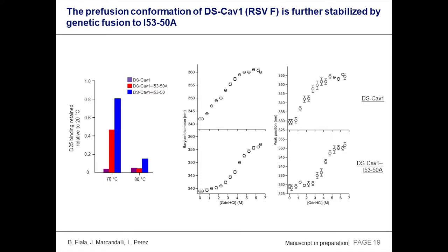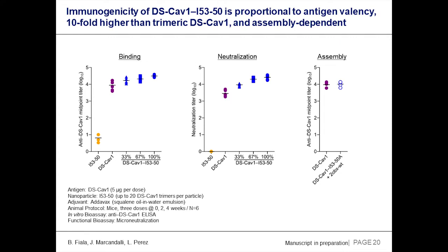This stabilization is really quite substantial. We've interrogated this using three orthogonal assays. Using intrinsic tryptophan fluorescence with guanidine melts — classical protein biochemistry — you can see an early transition for DS-CAV1 that appears to be absent when it's fused to our nanoparticle subunit, again suggesting stabilization.